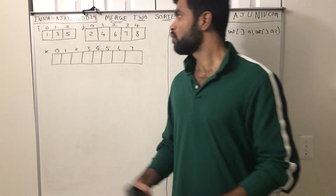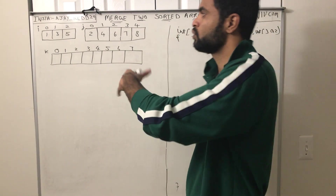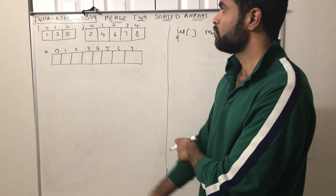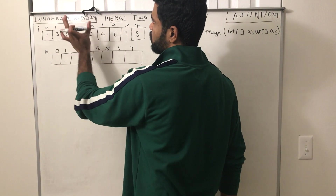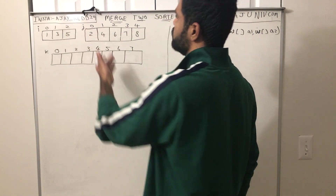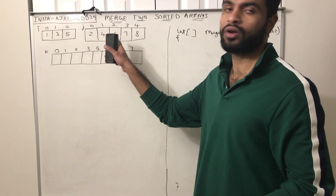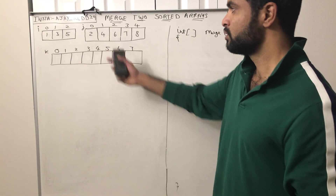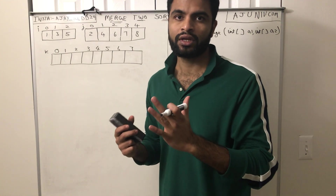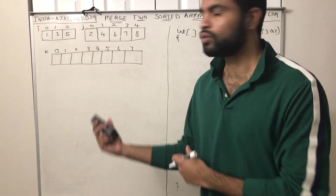Hello everyone, my name is Ajay. In this video I am going to explain how you can merge two sorted arrays into a single array in a sorted order. I have two arrays: one with items 1, 3, 5 and another with 2, 4, 6, 7, 8. Both are in sorted order, and I have to merge those two arrays into a single array in sorted order.